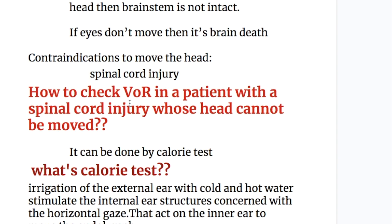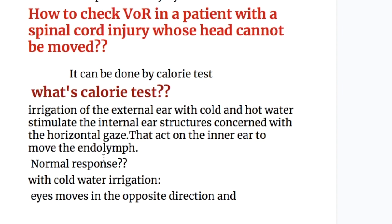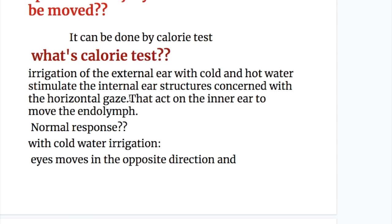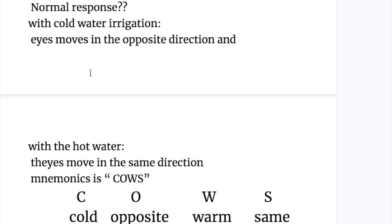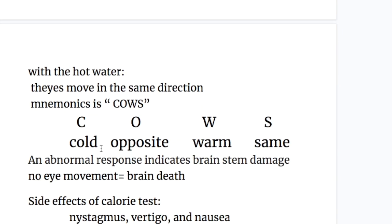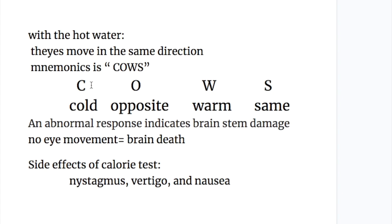How to check VOR in a patient with a spinal cord injury whose head cannot be moved? It can be done by caloric test. The caloric test involves irrigation of the external ear with cold and hot water, which stimulates the inner ear structures connected with horizontal gaze, directing endolymph movement. The normal response: with cold water irrigation, eyes move in the opposite direction; with hot water irrigation, they move in the same direction. The mnemonic is COWS — Cold, Opposite; Warm, Same. An abnormal response indicates brain stem damage, and no eye movement indicates brain death.